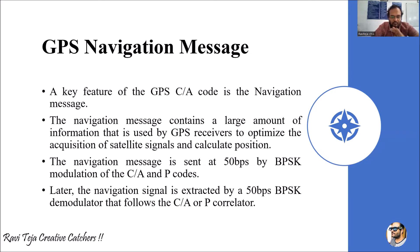The navigation message contains information required by GPS receivers related to the remaining satellites those receivers are communicating with. The navigation message is sent at 50 bits per second.